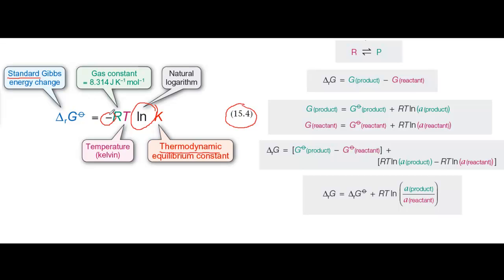This means that the more positive K is, the more negative delta G standard will be. This makes sense because we know that highly spontaneous reactions have a large positive value for K and a large negative value for delta G.